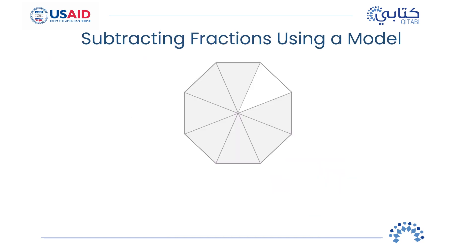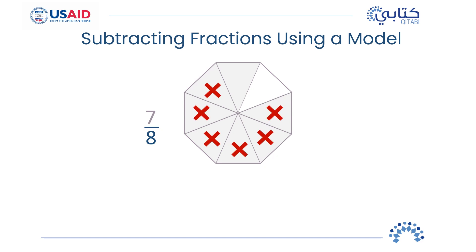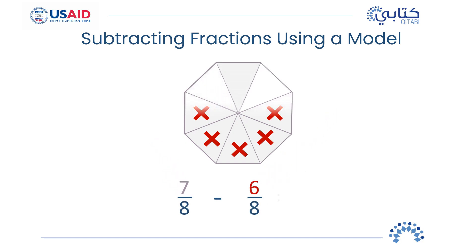Now let's subtract fractions using a model. Can you tell me the fraction of the shaded parts in the model? It is seven-eighths. And what is the fraction of the shaded parts with red crosses of the whole model? Six-eighths. Let us subtract these two fractions: seven-eighths minus six-eighths equals one-eighth. Well done!